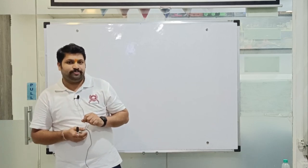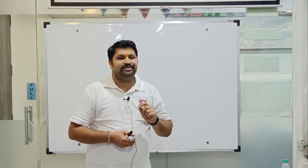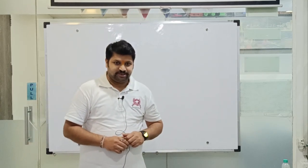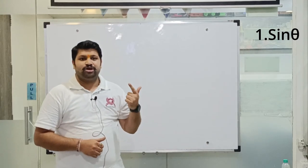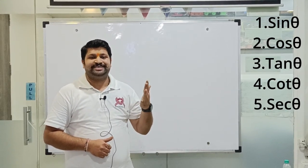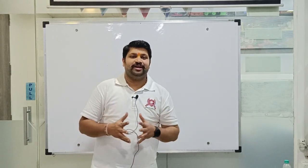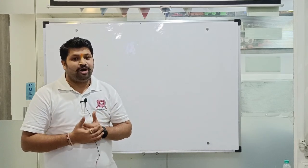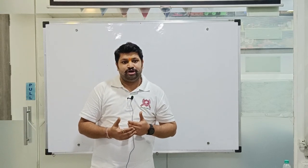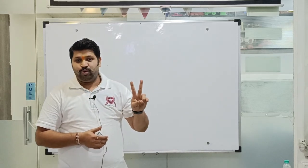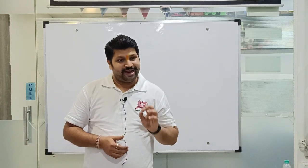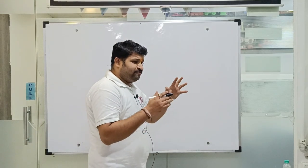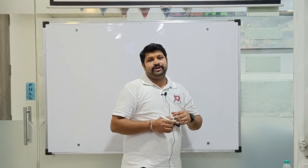We are going to talk about the trigonometric ratios of complementary angles. Before we go ahead, let us revise what we had done in the previous classes. We have six trigonometric ratios: sine, cos, tan, cot, sec, and cosec. They are related to each other. Today we are going to see how they are related when we talk about complementary angles. If we have two angles and their addition is equal to 90 degrees, then we call them complementary angles.